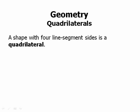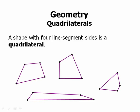Now we can talk about quadrilaterals. A shape with four line segment sides is a quadrilateral. Here we have four random quadrilaterals, which are actually called irregular quadrilaterals. It is possible for a quadrilateral like these to have four completely different side lengths and four completely different angles.